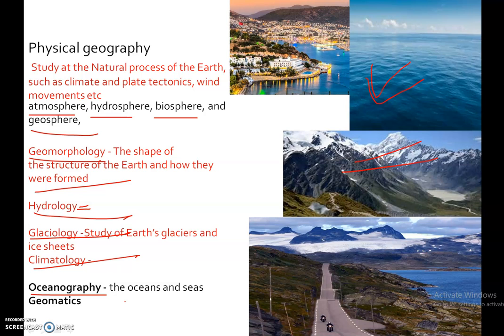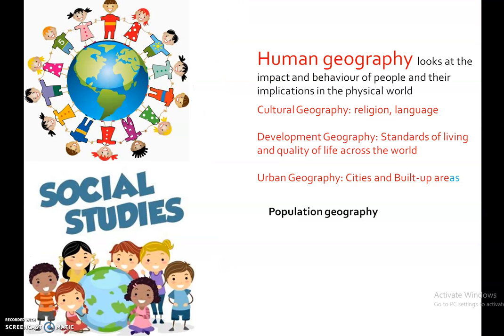Physical Geography is now more holistic in its system analysis of recent environmental changes. It also uses expertise in mathematical and statistical modeling as well as remote sensing techniques.